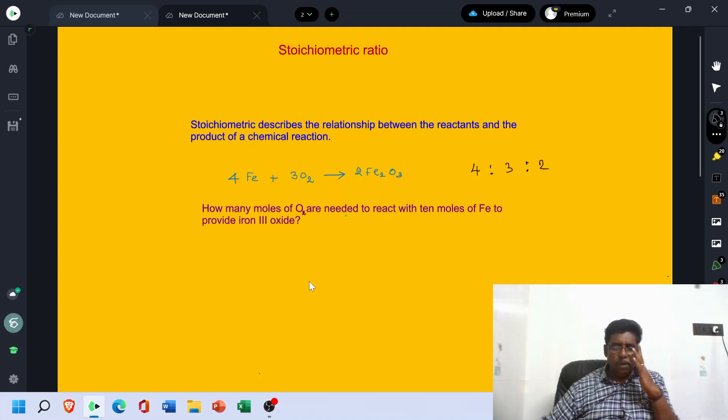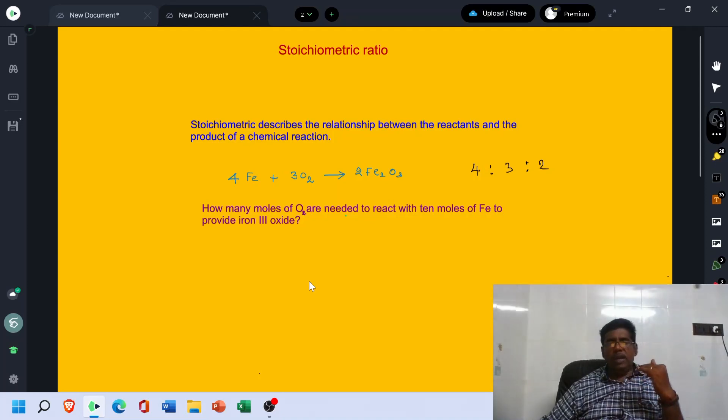Most researchers are getting confused and selecting improper proportions resulting in failure of their expectations. This is due to a lack of knowledge on stoichiometric ratio.